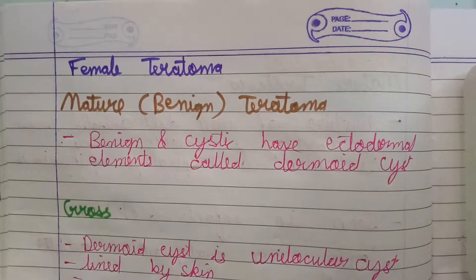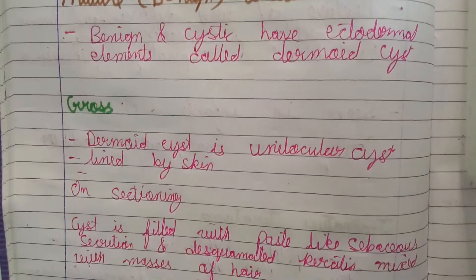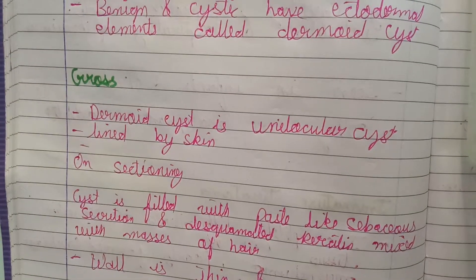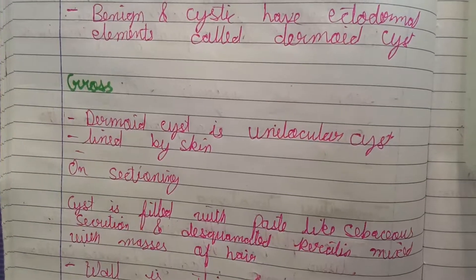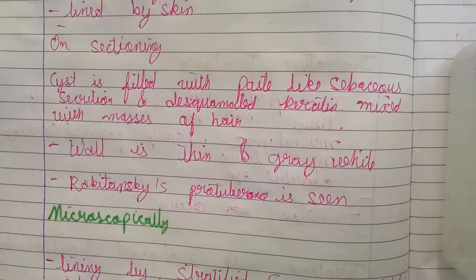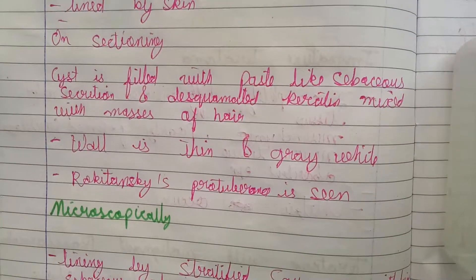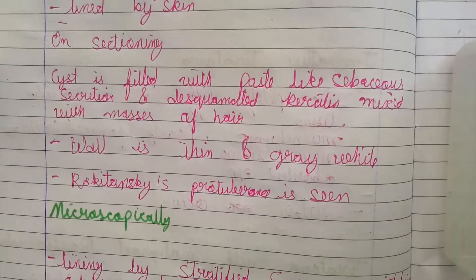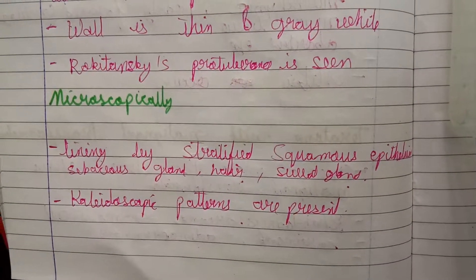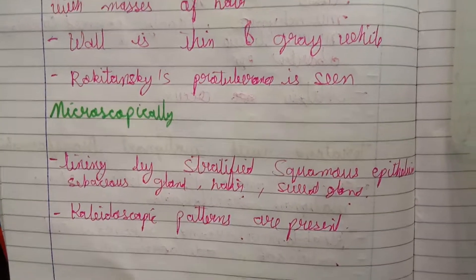Mature teratoma is also known as benign cystic teratoma. It has ectodermal elements and is called a dermoid cyst. Grossly, it is a unilocular cyst lined by skin. On sectioning, the cyst is filled with paste-like sebaceous secretion and keratin mixed with masses of hair; the wall is thin and gray-white with a prominent Rokitansky protuberance. Microscopically, it is lined by stratified squamous epithelium with sebaceous glands, hair, sweat glands, and a variety of other tissue elements.